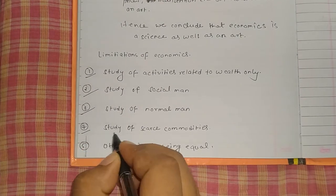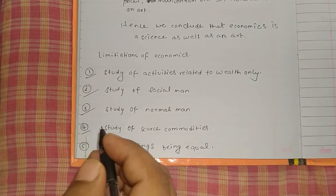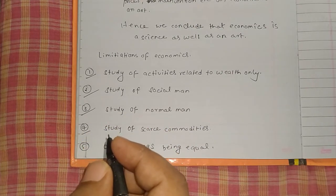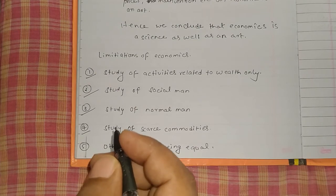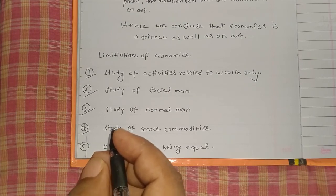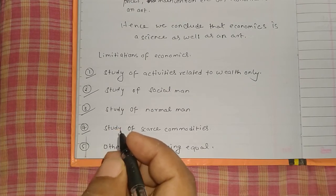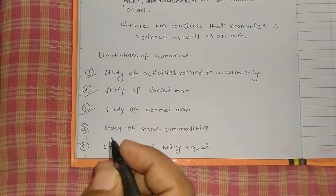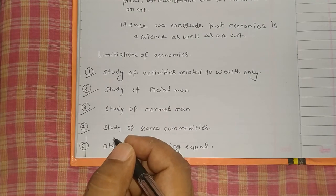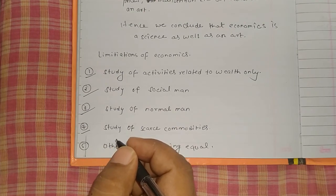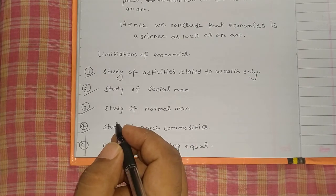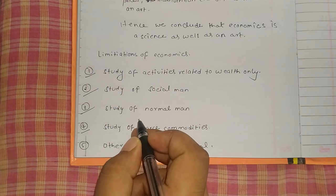The fourth limitation is the study of scarce commodities. Economics studies only those commodities which are rare or limited in amount and are used for the fulfillment of people's needs. Free goods — those with a higher supply than demand — are not included in economics.